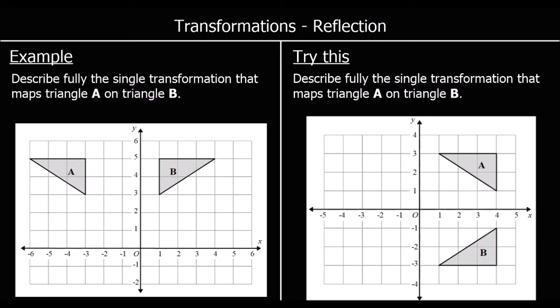When we have a transformation, it can either be a translation, which is where we just move the shape — we keep the shape the same and just move it up and down and left and right. We can have an enlargement, which is where the shape gets bigger or smaller.